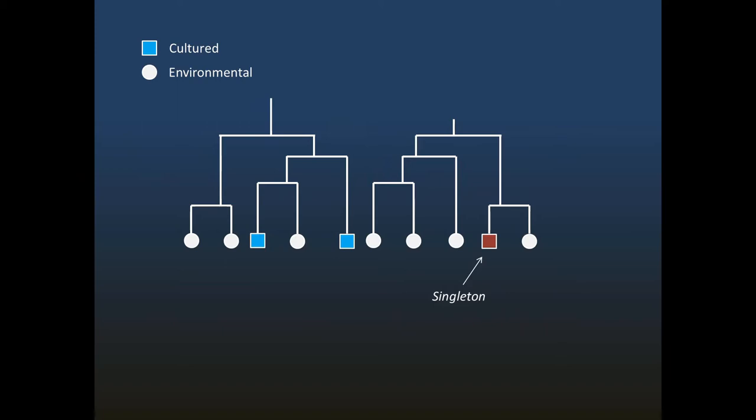You might be wondering if the blue example was a typical case or a pathological exception. Actually, it's very typical. The difficulty, or rather impossibility, of figuring out the lowest common ancestor node is most obvious when there's only one sequence in a group. Singletons are very common. In fact, roughly half of all named genera are known only from a single cultured strain.